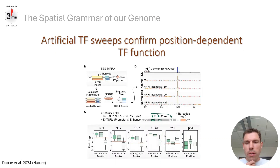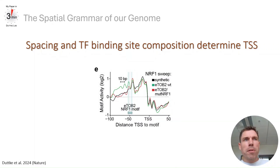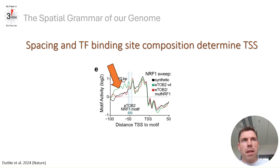Using our TSS-MPRA, we confirmed in an artificial setting that the position of the transcription factor binding site — as shown here for NF1 — impacts the TSS. Both spacing and transcription factor binding site composition also determine transcription start site selection. For instance, the activity of the NF1 motif when sweeping it through this TOPS2 enhancer was influenced by the native NF1 site.